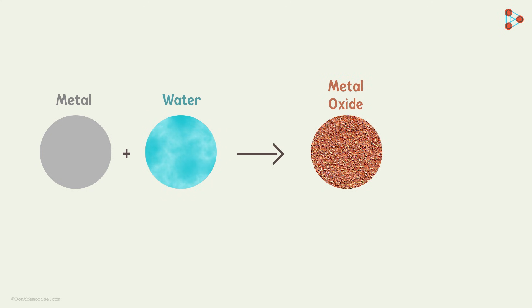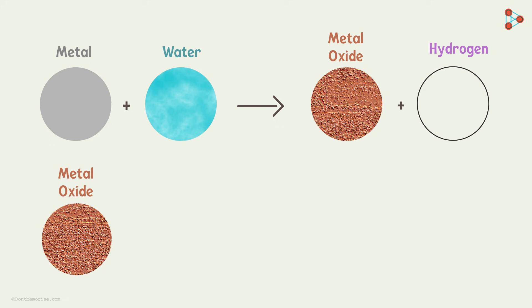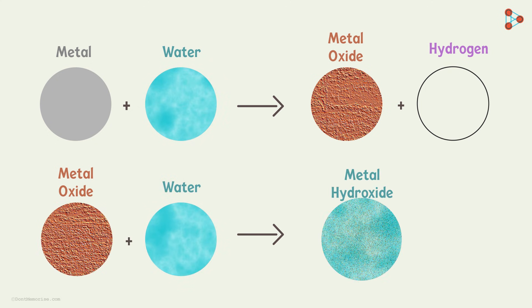In general, metals react with water to form metal oxides and hydrogen gas. And if the metal oxide formed is soluble in water, it will dissolve to further form metal hydroxide.